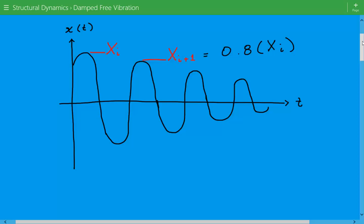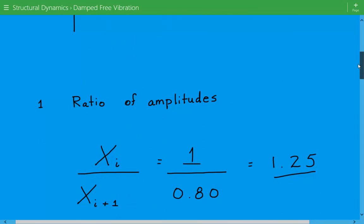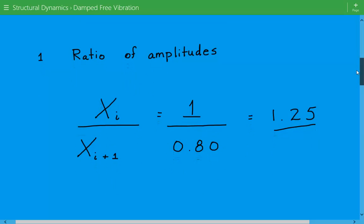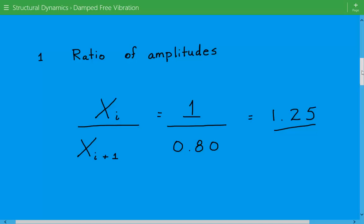And now coming back to our dynamics problem, the first thing we need to do is calculate the ratio of the two successive vibration amplitudes, and that's simply equal to x sub i divided by x sub i plus 1, so 1 divided by 0.8, and that's equal to 1.25.